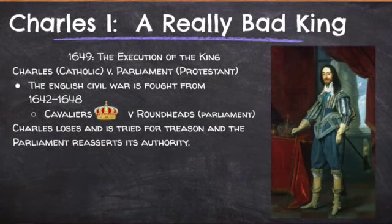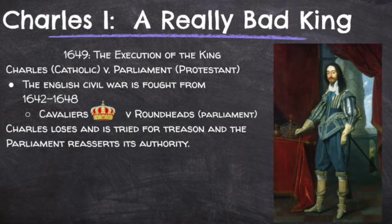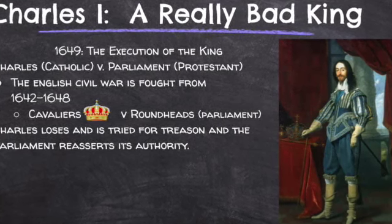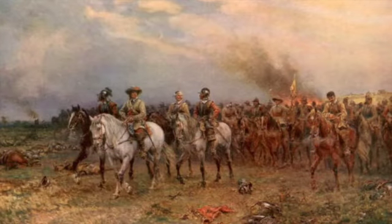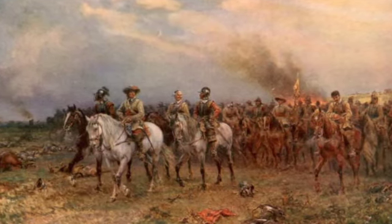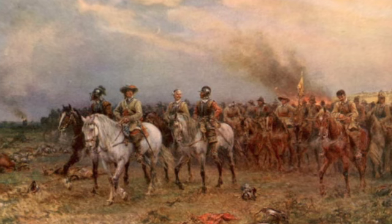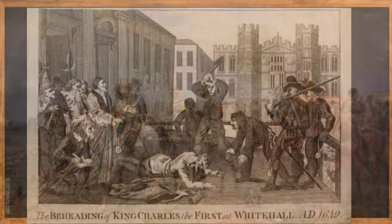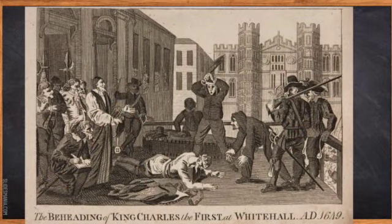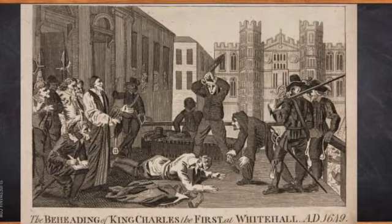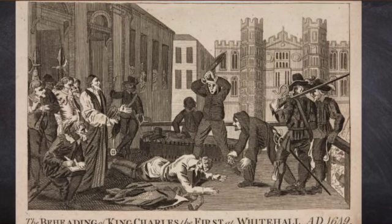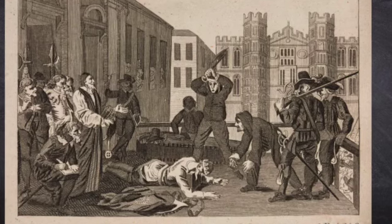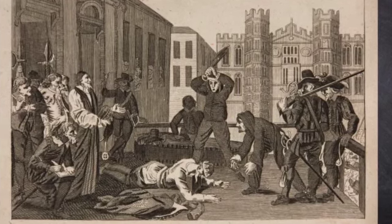He continues to ignore Parliament for the next 11 years, which leads to one of the causes of the English Civil War in 1642. When the war broke out, the two sides were: Charles and the Catholics, known as the Cavaliers, who were loyal to the Crown, and the Roundheads, who were loyal to Parliament and the Protestants. They fought for about four years, and ultimately Charles and the Crown lost. Charles was put on trial for treason and executed in 1649, marking one of the first times a monarchy had been overthrown by the will of the people.